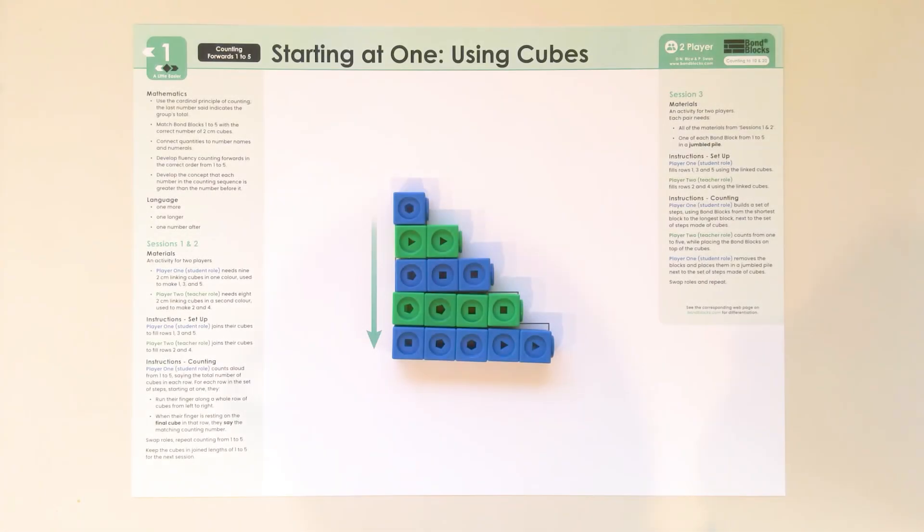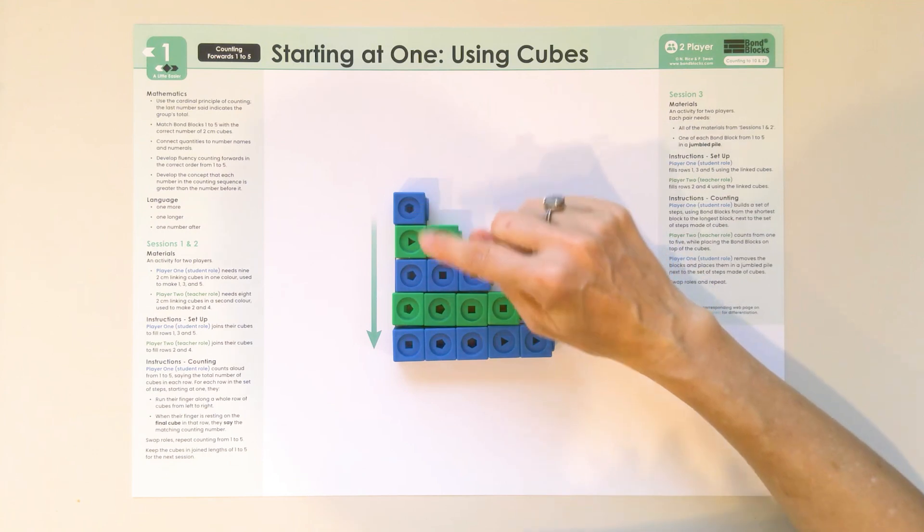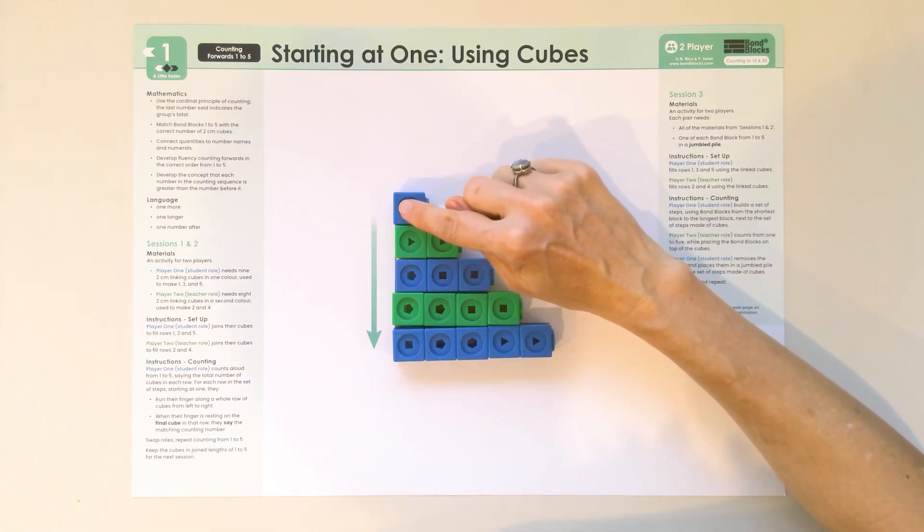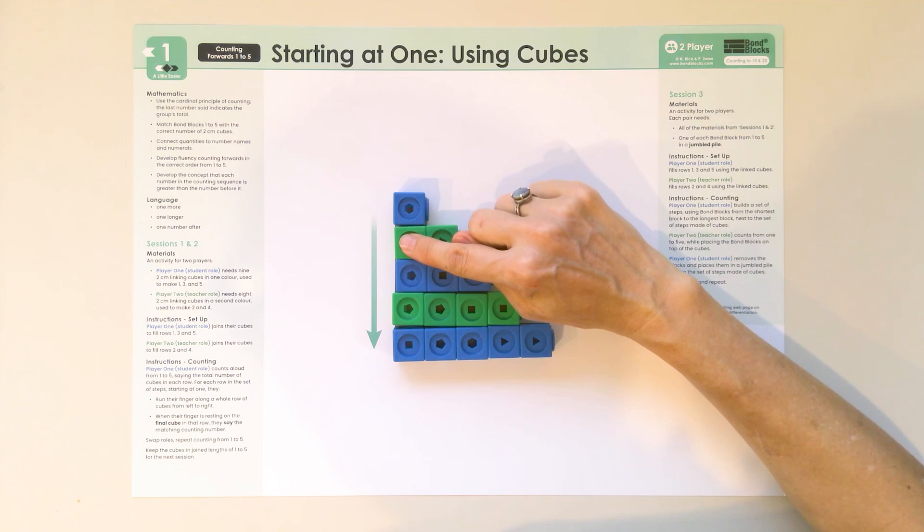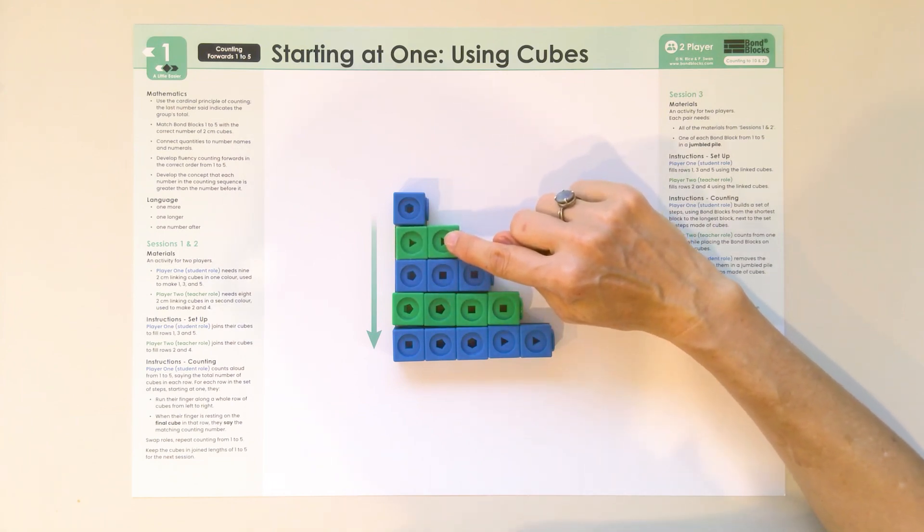Today when we count, we're not going one, two, three, four, five. We're going to go very slow, which makes it a bit trickier. We're going to do it like this. We put our finger on the first cube and say one. We move it down to the next row, and we slide it all the way across and say two.